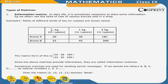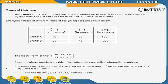Applications of matrices. Information matrix: In daily life, it is sometimes necessary to store some information. For example, we often see the table of rates of various articles sold in a shop. Example: rates of different kinds of tea in rupees are shown below. The matrix form of this is [20, 38, 180; 25, 45, 200]. Since the above matrices provide information, they are called information matrices. Sometimes matrices are used for sending secret messages. If we denote the letters A, B, C, D and so on by natural numbers 1, 2, 3, then the matrix [2, 15, 15, 11] denotes the word 'book'.